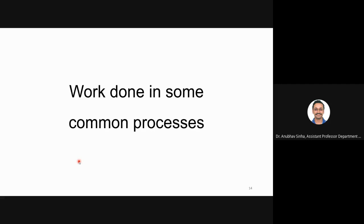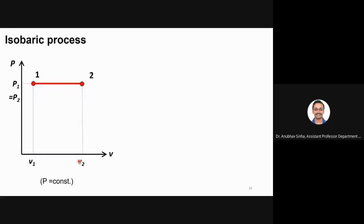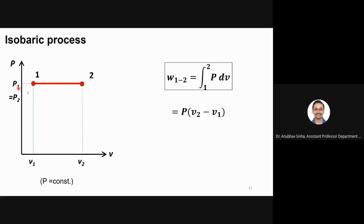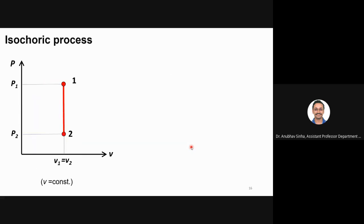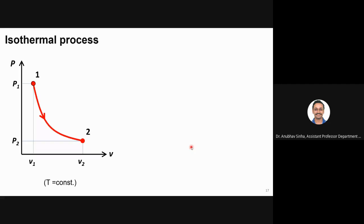Let us look at some common processes and calculate work done. For an isobaric process, pressure is constant from P1 to P2. Integrating P·dv with P constant, I can take P outside the integral, giving work = P·(V2 − V1) = P·ΔV. For an isochoric process, volume is constant so dV = 0, and the area under the curve is zero — the work done is zero.